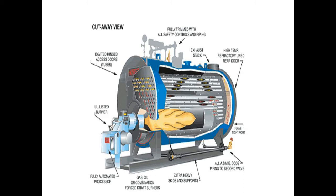You can see that the burner is on fire as shown in the picture and by the arrow. After the burner fire, the hot air will move through the tubes as shown by the arrow, from one end of the tubes to the other end, and then this hot air will finally move out of the boiler through the exhaust.